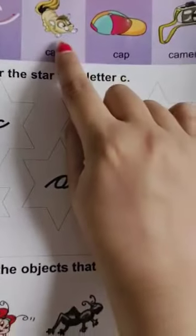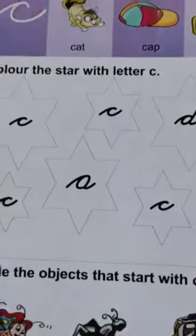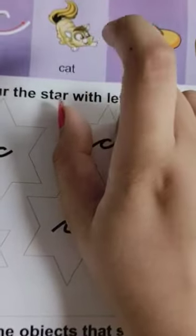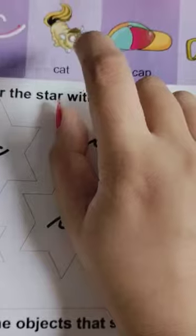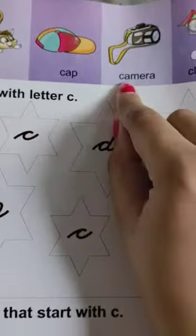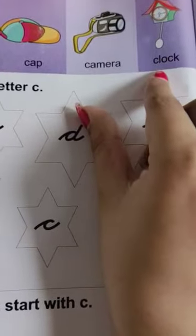First you have to identify the picture. Which picture is this? Who is this? This is cat. This is cap. This is camera. This is clock.